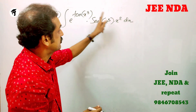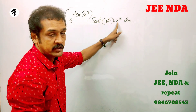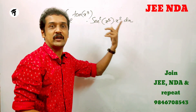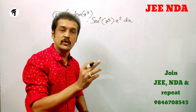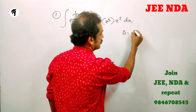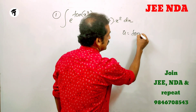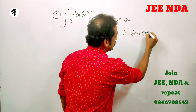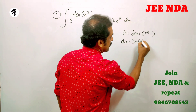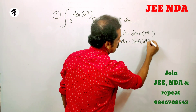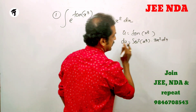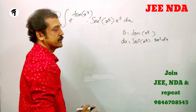We substitute: let u = tan(x³). Then du, in terms of the variable, gives us sec²(x³) into 3x² dx. This x³ with 3x² dx is the derivative.